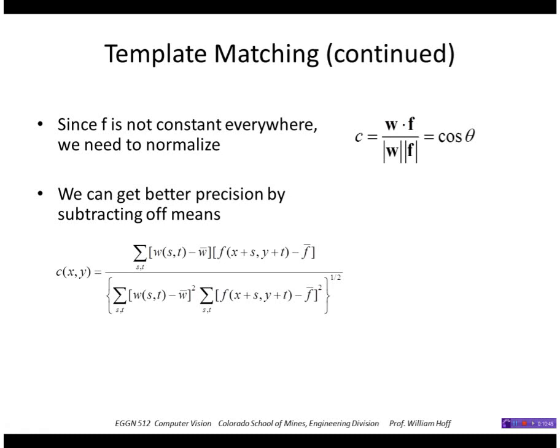Now, we can get better precision by subtracting off the means before we do this vector operation. So we're going to find the mean of our w, find the local mean of our f, subtract that from the values before we do the sum of products.